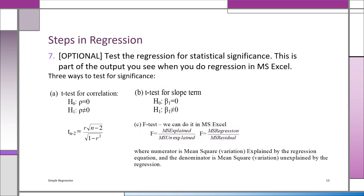There are three ways to test regression for significance, which you'll see in Excel output: you can test r for significance, test the slope term (H0: b1 equals 0), or use the F-test from the ANOVA table. It's important to test for significance to confirm there's a relationship between x and y. If there isn't, don't do regression or correlation.